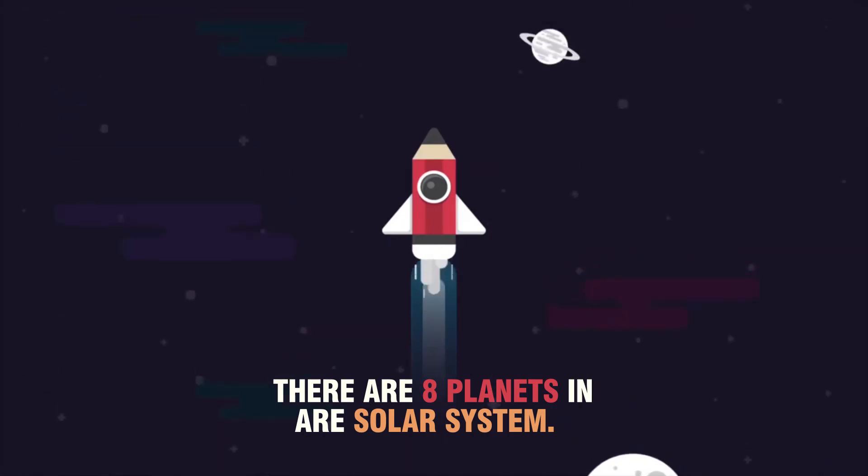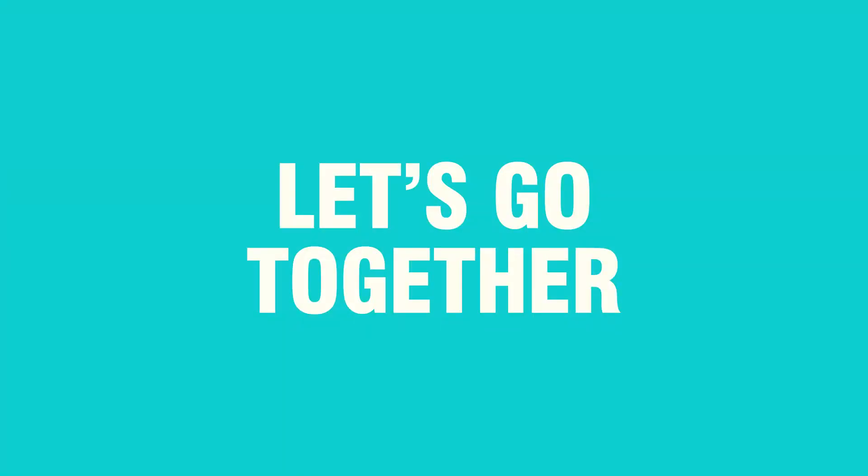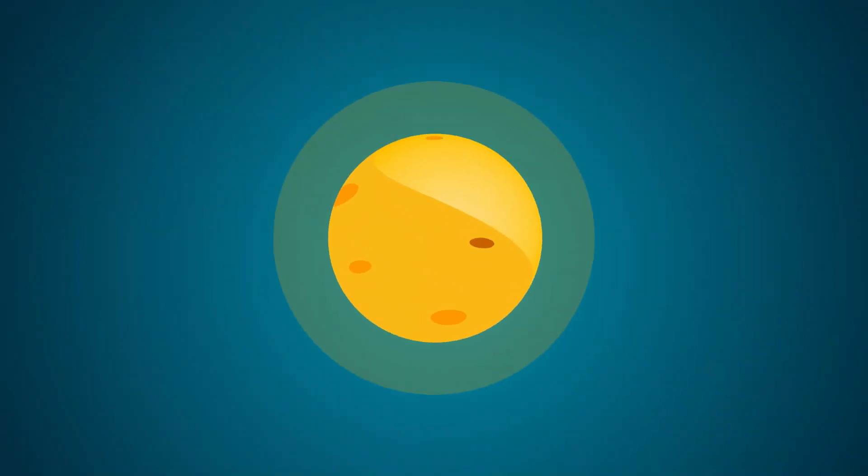There are eight planets in our solar system. Can you name them? Okay, let's go together. Beginning with the nearest planet to the farthest planet from the sun.